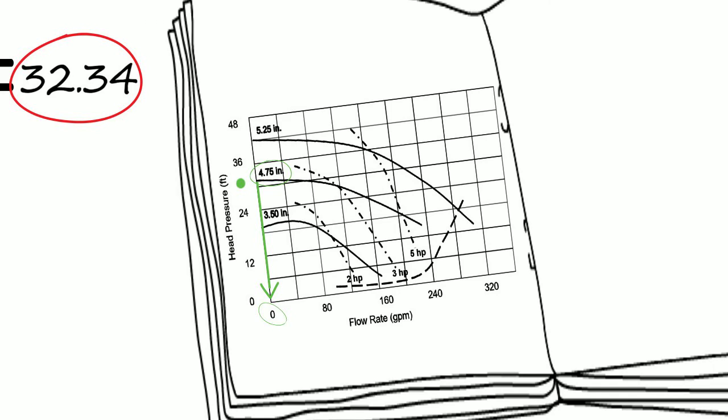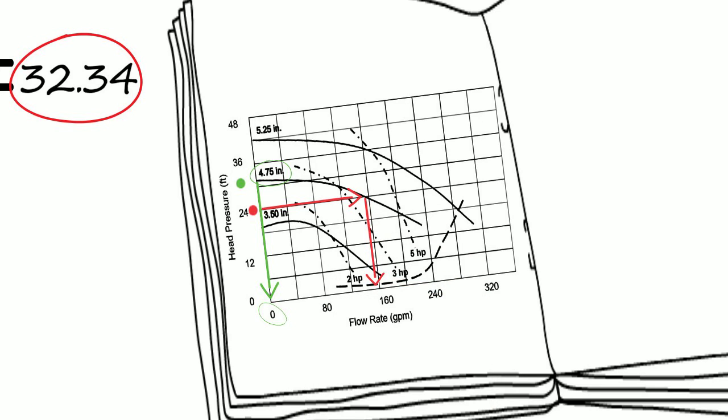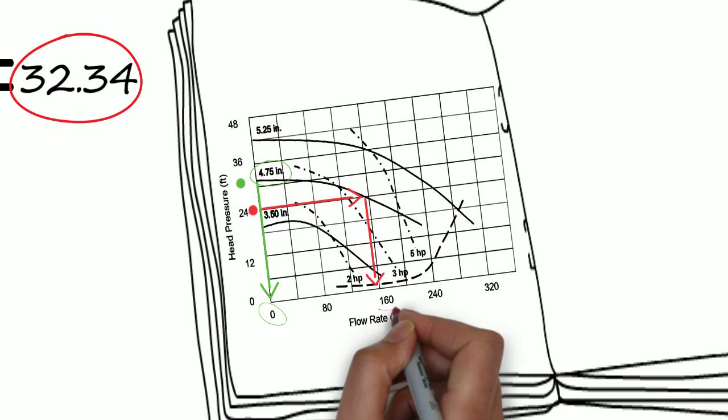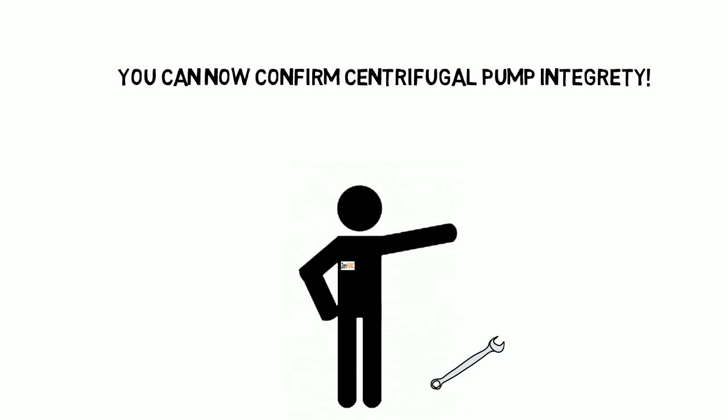What if it was reading something else? See, this is a good situation, the green. But what if we had a different reading? Say we had 24 feet of head. We draw an arrow over until it hits the 4.75 pump curve, draw an arrow down, and we're almost doing 160 GPM. Well, how can that be if the valve is shut? This is an indication that your pump reading is off. Either the impeller is worn, the cut water is broken, wear ring is off, motor speed is down. You can now confirm centrifugal pump integrity.